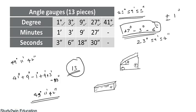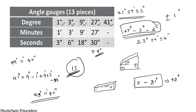Using the 13-piece angle gauge set, we can build angles from 0 to 81 degrees. To increase the range to 90 degrees, add one more 9-degree gauge. To increase to 0–180 degrees, add a 90-degree angle gauge, making it a 15-piece angle gauge box.